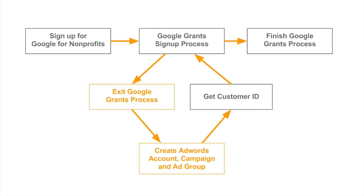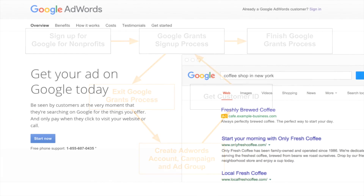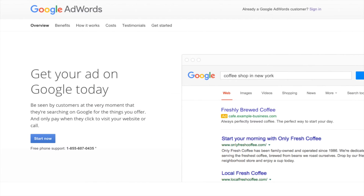At this point, we're ready to temporarily leave the Google Grants signup process and begin the Google AdWords signup process. It's important to keep the page you were just on open — simply open a new tab to create an AdWords account. To get to Google AdWords, go to Google and do a quick search for Google AdWords. It should be one of the top listings.